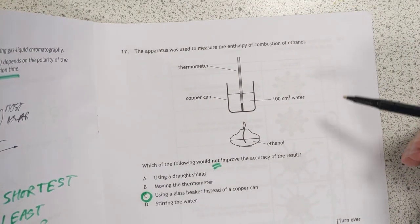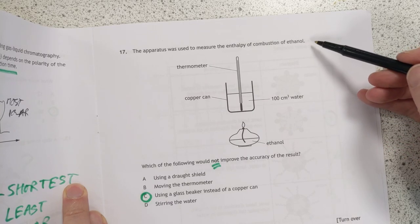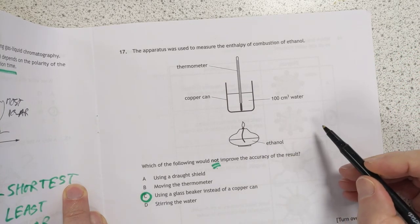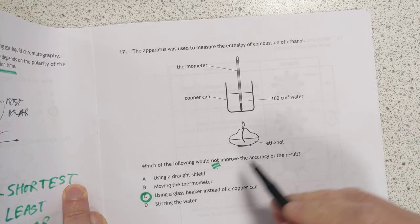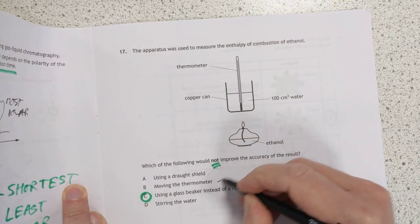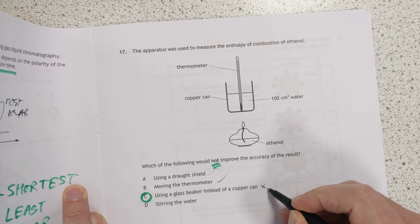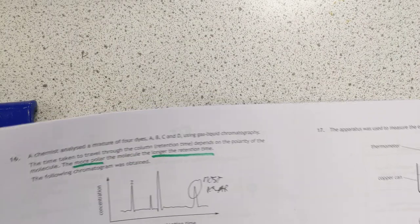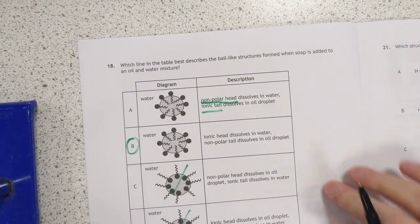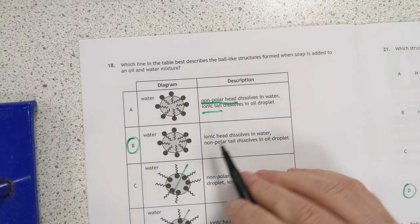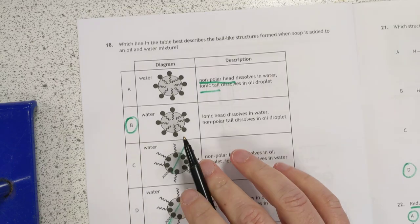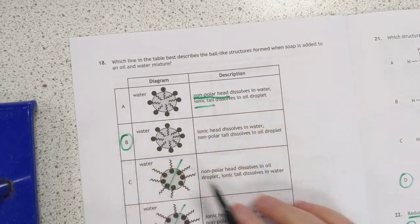Number 17. The apparatus is used to measure the enthalpy of combustion of ethanol. Which the following would not improve the accuracy of the result. Using a draft shield is good. Moving the thermometer off the surface is good. Using glass is bad. So that would not improve it. So that's the answer. And stirring the water is also good. How are we doing for time? We're doing good for time. 18. Basically, it's these two are out. Because the molecules, the soap's the wrong way around. And this one, the description's the wrong way around. So it's B.